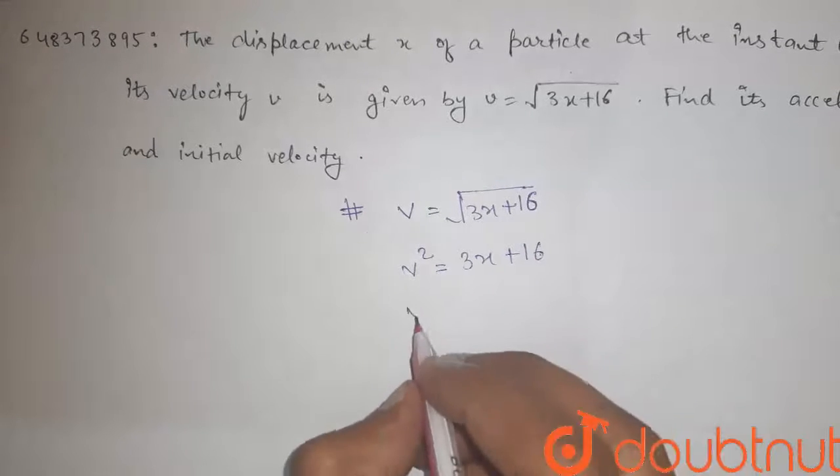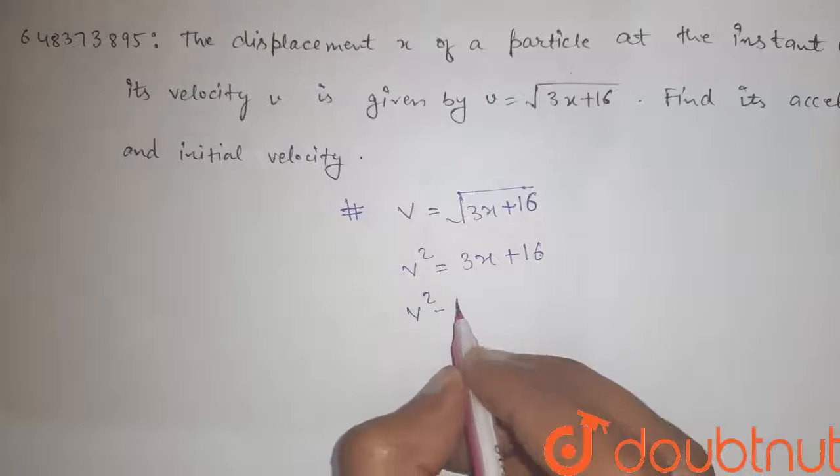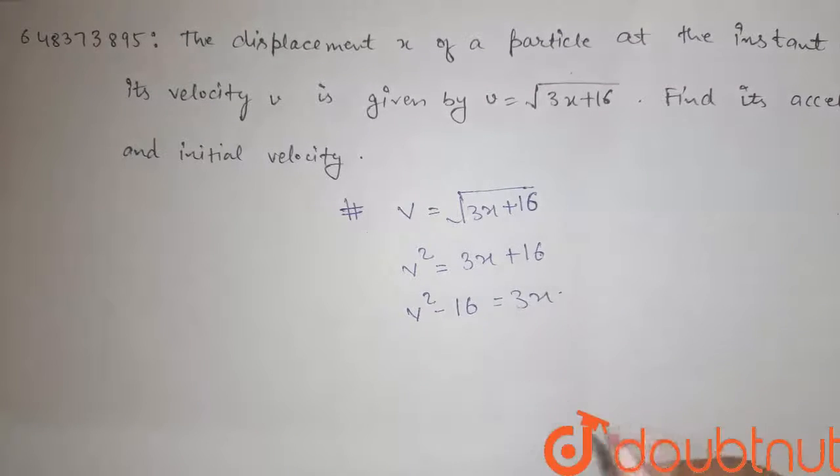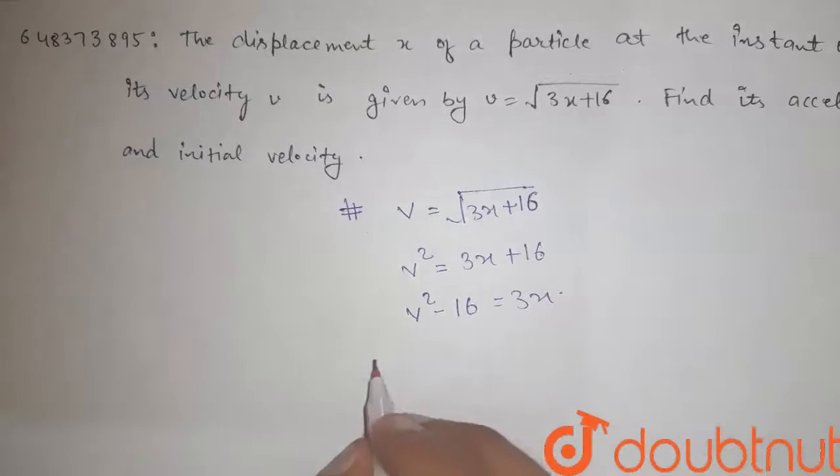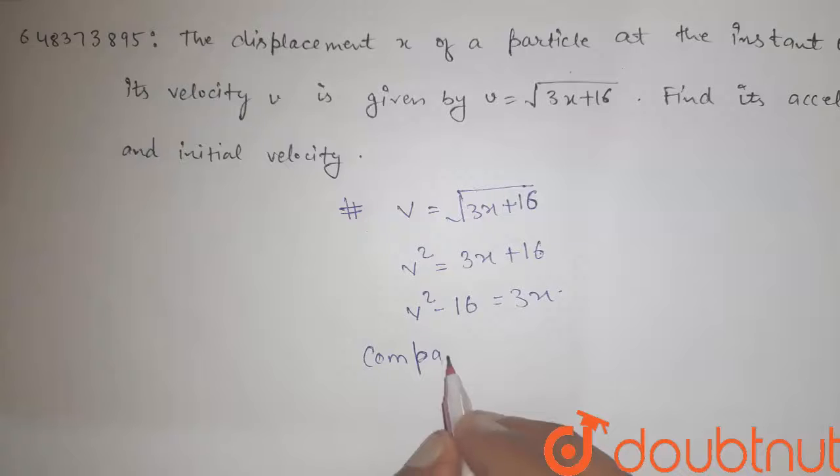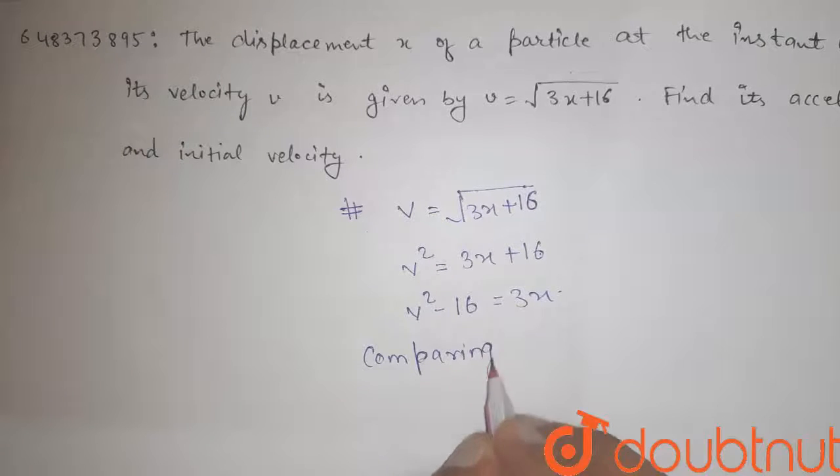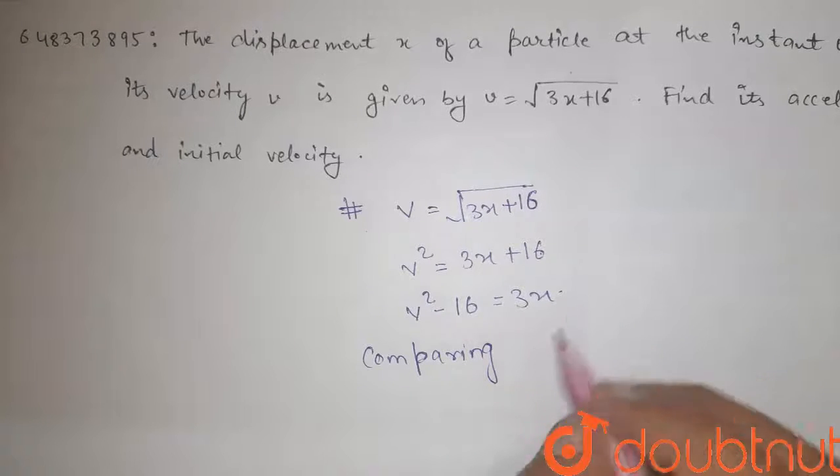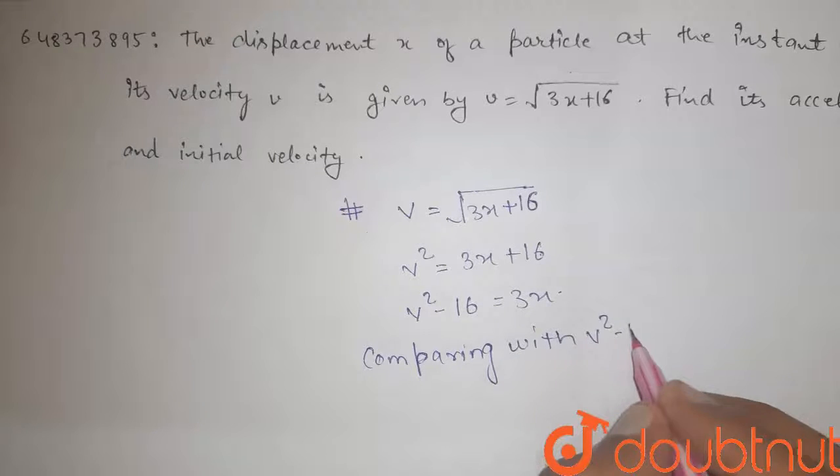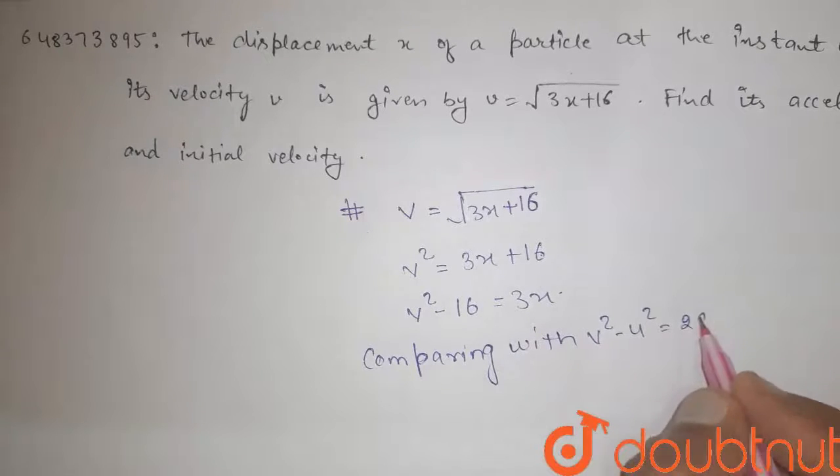If we rearrange it, it becomes v squared minus 16 equals 3x. And if we compare this equation with v squared minus u squared equals 2as...